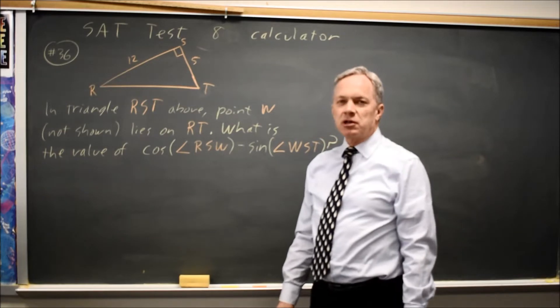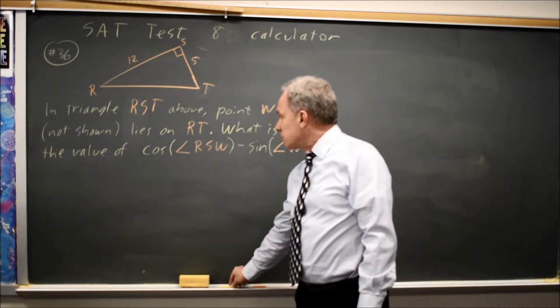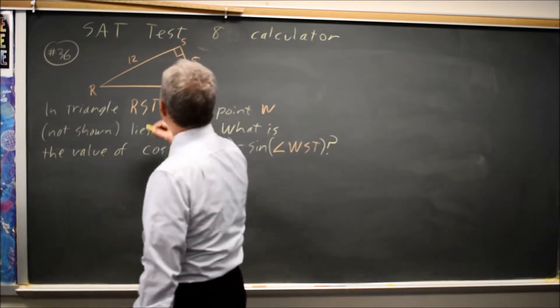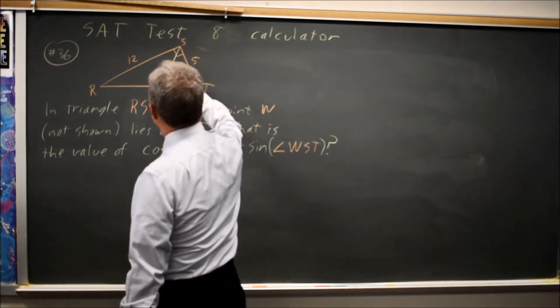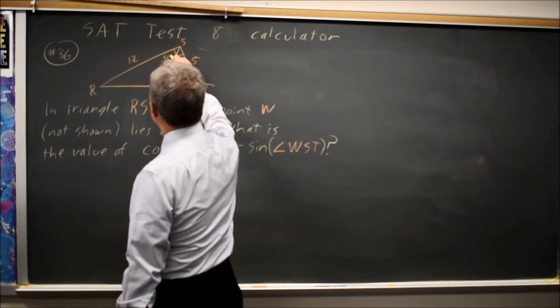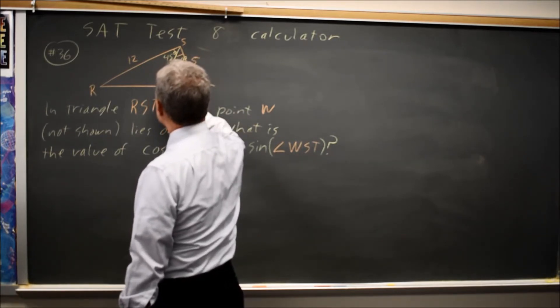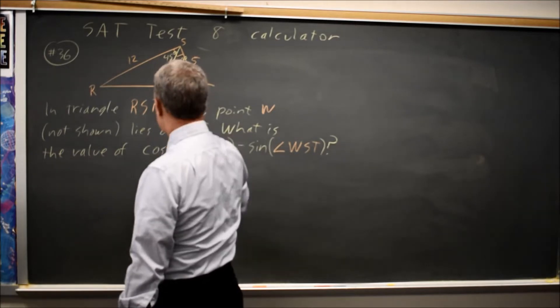Since there is only one correct answer, or at least that's what the question implied, I'm going to choose a convenient point. Let's bisect angle S, where this is 45 degrees and this is 45 degrees, so this would be point W.